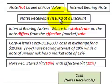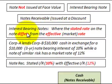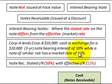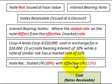Here we're going to be looking at a notes receivable that's purchased at a discount, meaning the purchase price is less than the face value of the note. This is an interest-bearing note where the stated rate on the note differs from the effective market rate. For example, Corp A lends Corporation B $10,000 in cash in exchange for a $10,000 three-year note bearing interest of 10%, while a note of similar risk has a market rate of 12%. So the stated interest rate is 10% and the effective market interest rate is 12%.